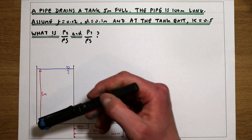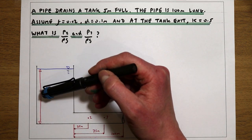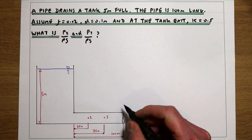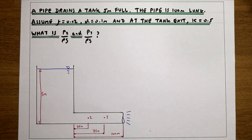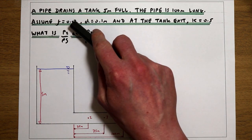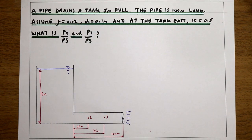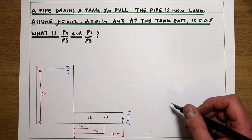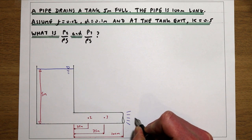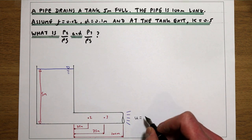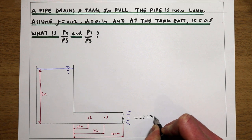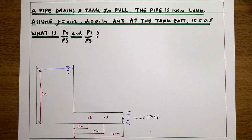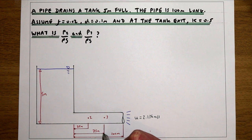In this example, we've got a tank that's full of water to a depth of 5 metres, and that's driving a flow through this pipe. We're told that we've got losses due to friction with a friction factor of F equals 0.02, and we've got a local loss at the exit from the tank into the pipe. In the previous video, we used Bernoulli's equation to work out the velocity coming out of this pipe — we worked out that the velocity was 2.136 metres per second. In this example, we're being asked: what is the pressure 25 metres down this pipe and 75 metres down this pipe?